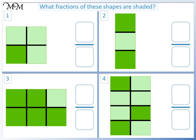Here are some questions for you to try. What fractions of these shapes are shaded? Pause the video and have a go. There are four parts in total, so the denominator is four. One part is shaded, so the numerator is one. The fraction is one quarter.